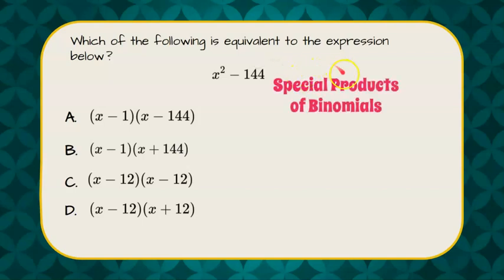This is what we call a special product of a binomial. It's a binomial because it has two terms - like bicycle has two wheels, binomial has two terms.